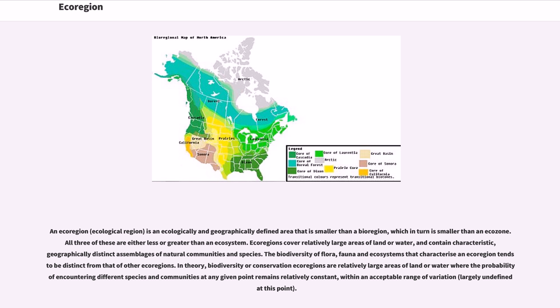In theory, biodiversity or conservation ecoregions are relatively large areas of land or water where the probability of encountering different species and communities at any given point remains relatively constant, within an acceptable range of variation.